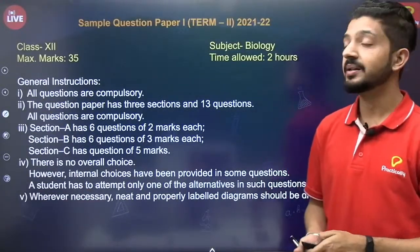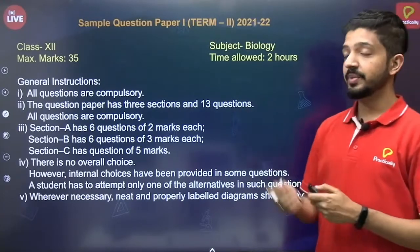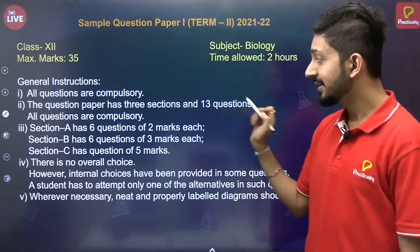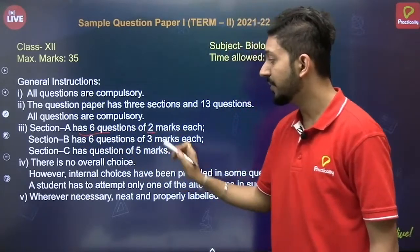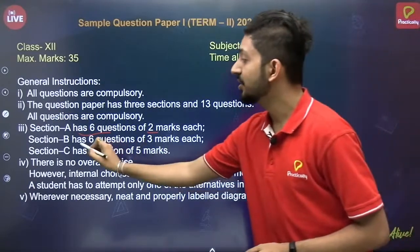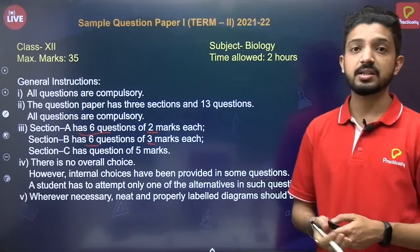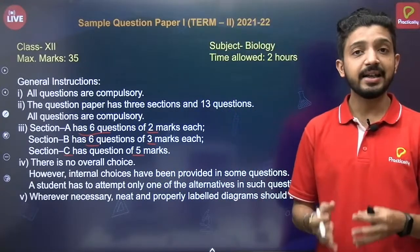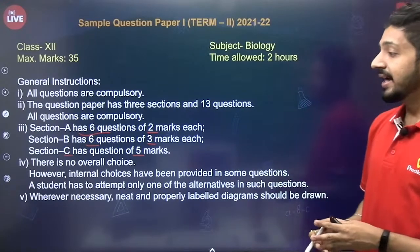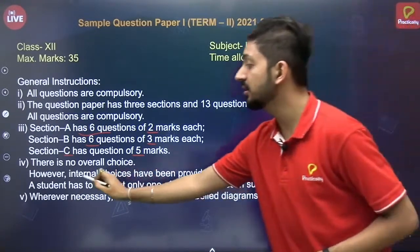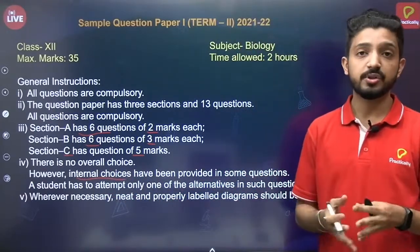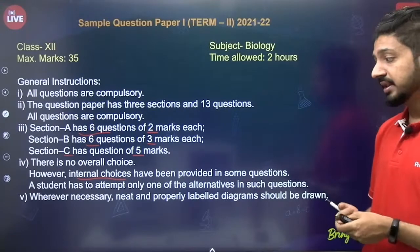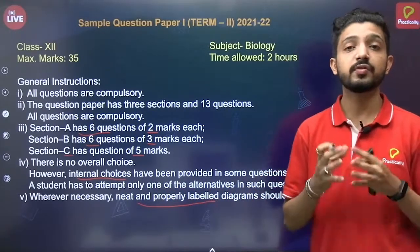This is the latest pattern according to CBSE. The question paper will be of 35 marks and we will have a total of 13 questions. It has three sections: Section A will have six questions of two marks each — short answer type questions. Section B will also have six questions but of three marks each — long answer type. Section C will have one question of five marks, which can be a case study or a long answer question. There are no overall options but there are internal choices in some questions.